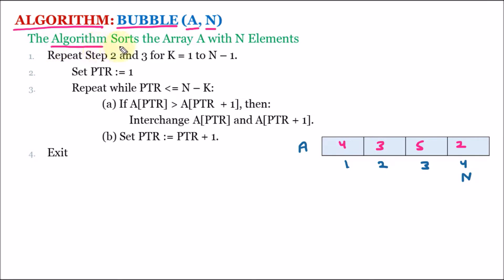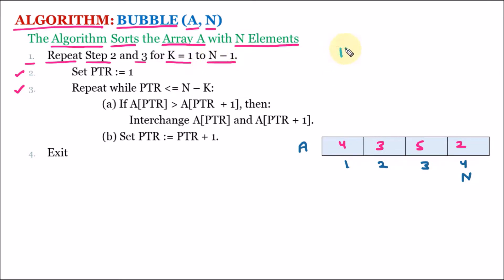The bubble sort algorithm sorts the array having N elements, arranging them into ascending order. Line number 1 of the algorithm says to repeat steps 2 and 3 for the value of k equal to 1 to N minus 1. So we have variable k whose value is right now 1. The value of k can go till N minus 1, and since N is 4, that means till 3. Right now k is 1 which is less than 3, so the condition is true.